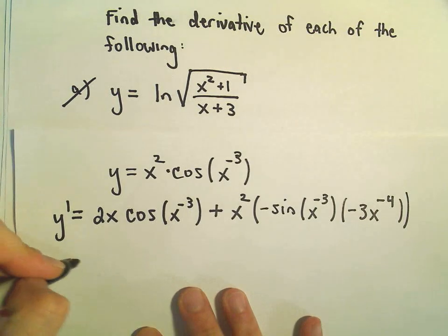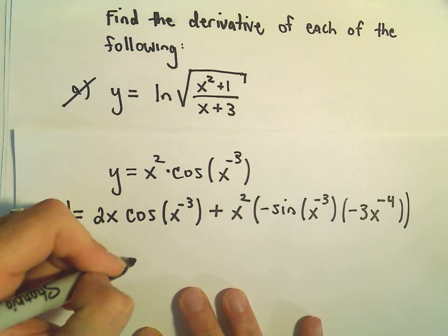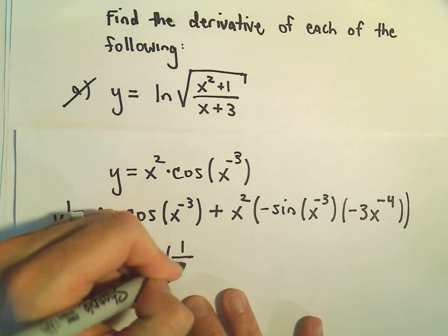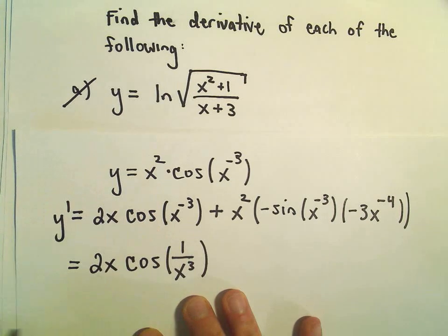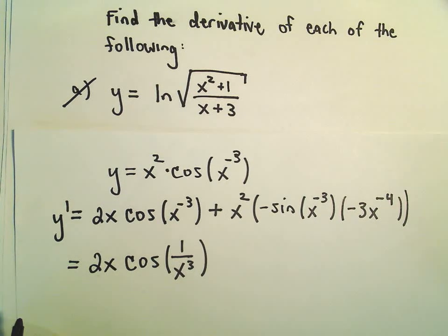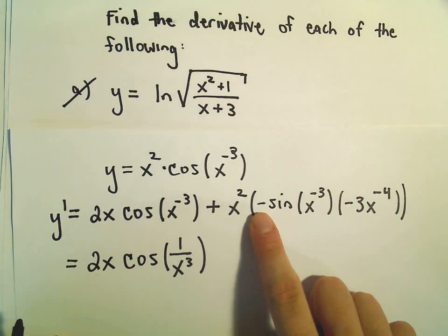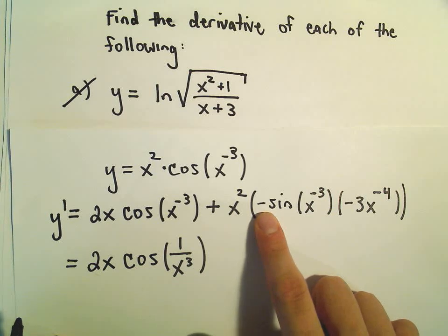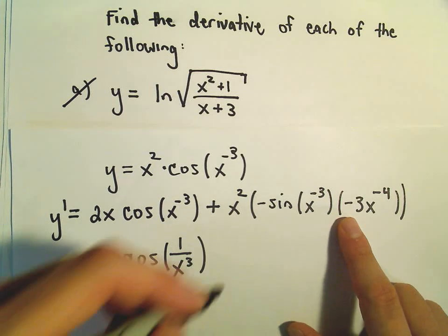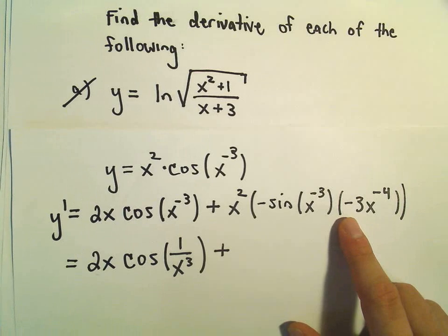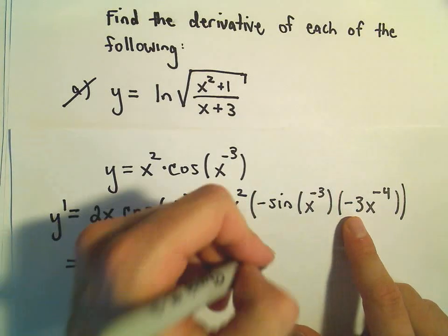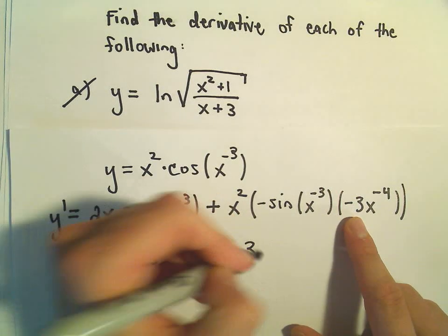I'm going to rewrite this and simplify. So this is 2x times cosine of one over x to the third, just like it was at the beginning. Notice we have a negative - you can think about this as being a negative one times a negative three, so we're still going to stay positive. That takes care of my signs. I'm going to pull the three out front.